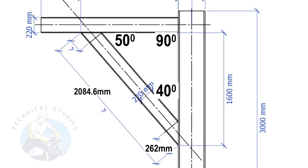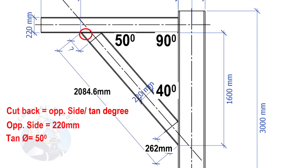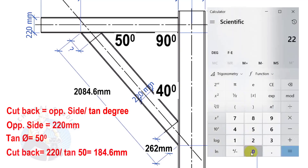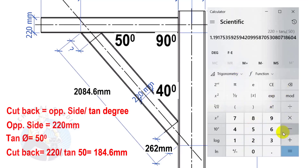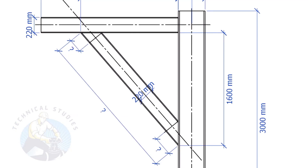Apply the same formula to calculate the second cutback. Here, the opposite side is 220 mm and the tan degree is 50. Cutback equals 184.6 mm.